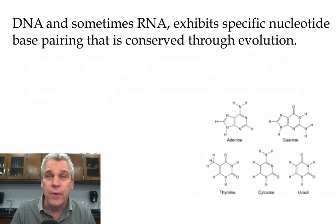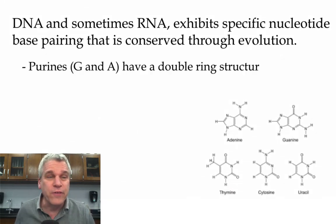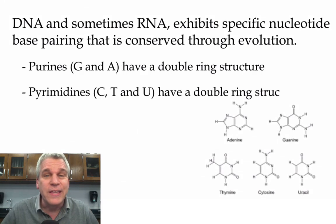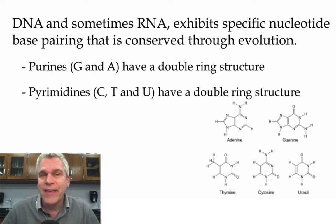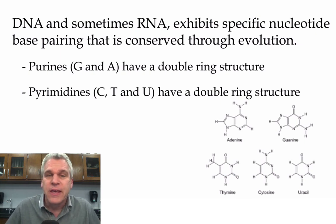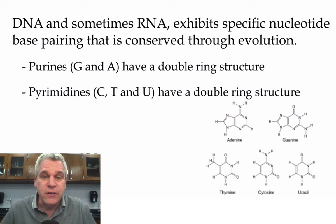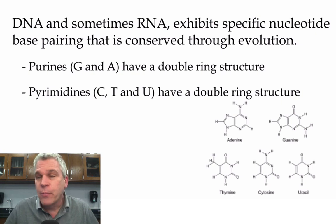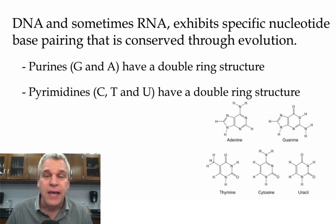And if you recall from an earlier video, the double-ring structures, the guanine and the adenine, are called purines. The cytosine, thymine, and uracil have the single-ring structures, and those are pyrimidines.